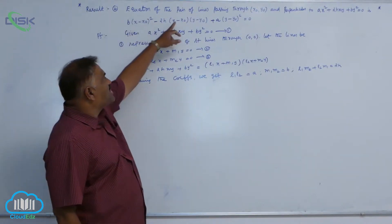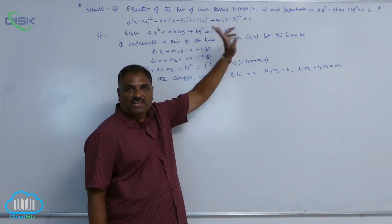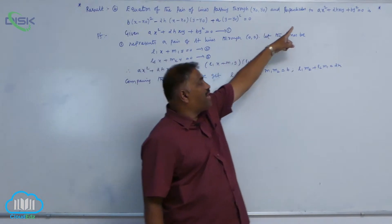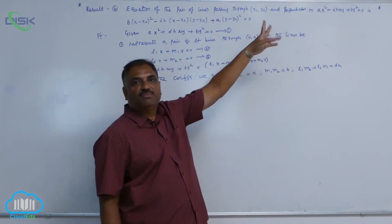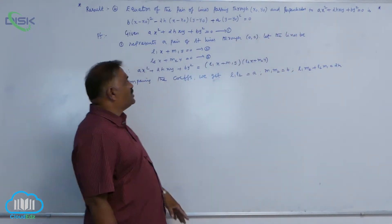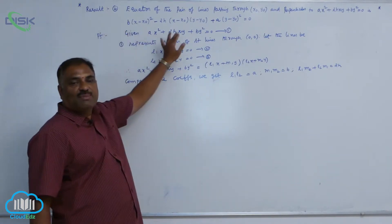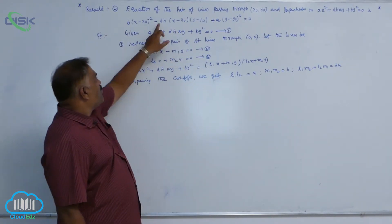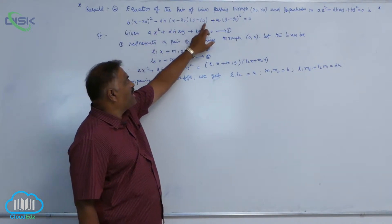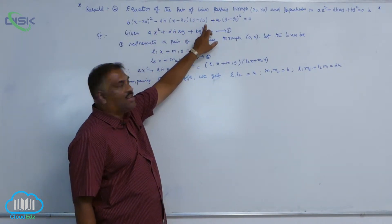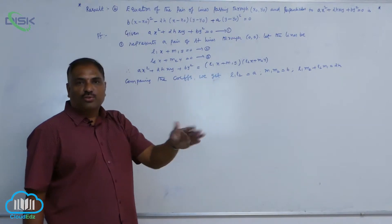One more result: the equation of the pair of lines passing through (x₀, y₀) and perpendicular to ax² + 2hxy + by² = 0 is b(x - x₀)² - 2h(x - x₀)(y - y₀) + a(y - y₀)² = 0.